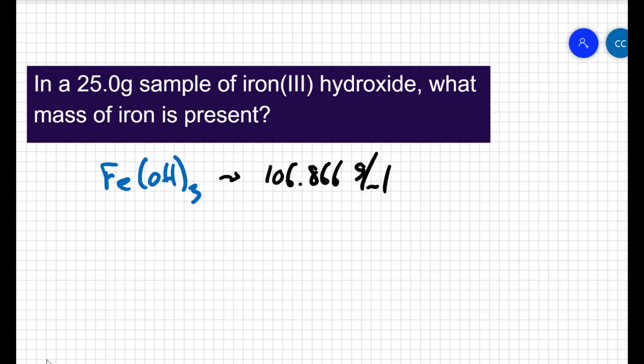There are a couple of ways to do this. We're doing percent composition. So, we could find the percent composition of iron in iron 3 hydroxide. Iron has a molar mass of 55.845, and if I divide that by a total of 106.866, turn that into a percentage, I get a percentage of 52.3% iron, which means 52.3% of my sample is iron.